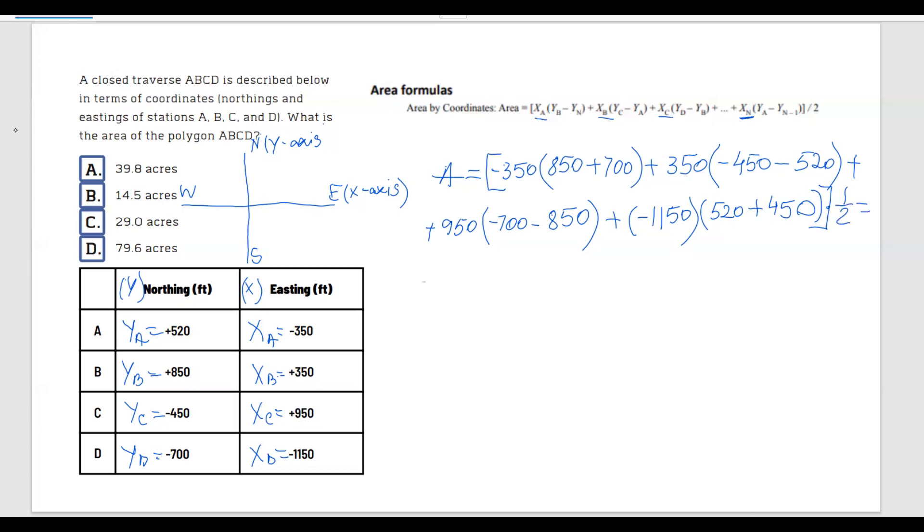Now we're going to just use our calculator and calculate each term. So I'm going to start with this guy. 850, 700 plus 350, multiply, I get -542,500.